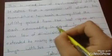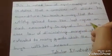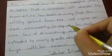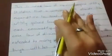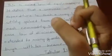This is called law of equimarginal utility. It states that a consumer will allocate his expenditure in such a way that the utility gained from the last rupee spent on each commodity is equal.